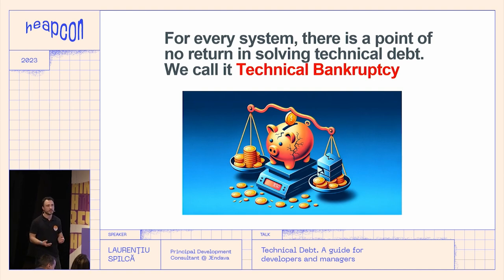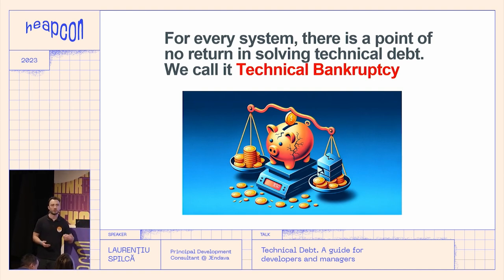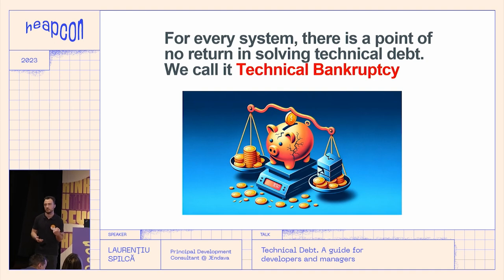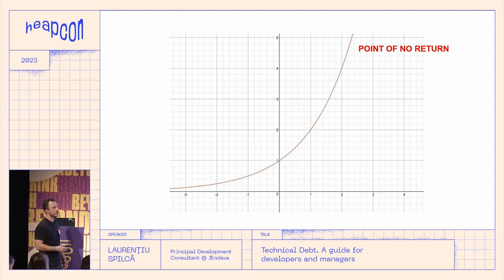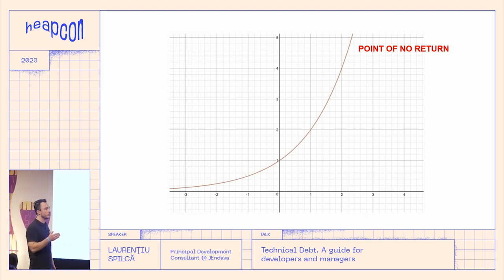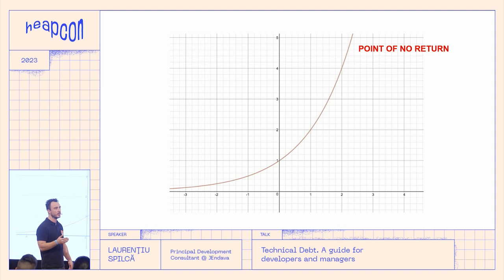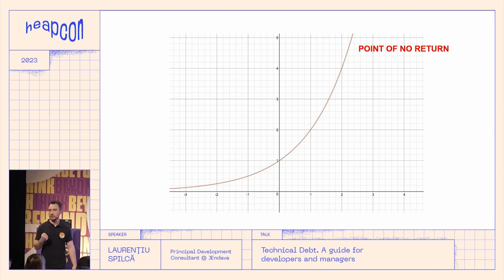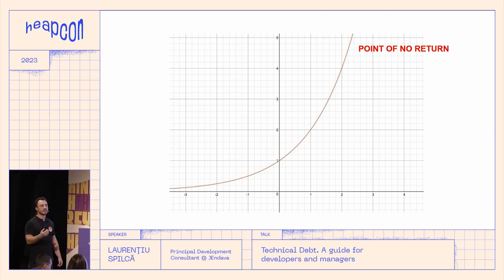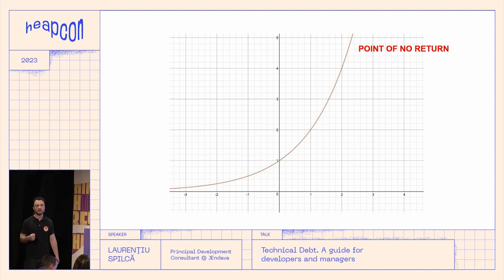Remember, the reason we implement software is to get profit out of it. If your software is not profitable, it's bankrupt software. One of the main reasons we end up with non-profitable software is poorly addressed technical debt. You say software is in technical bankruptcy when it costs more to implement than the value you can extract — your profit is negative. That's what happened to my Italian startup.